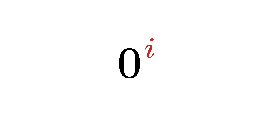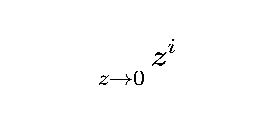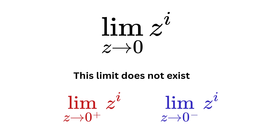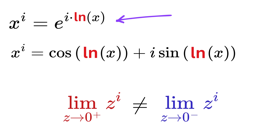So instead of evaluating 0 to the i directly, what if we bring a number, say z, which gets infinitely close to the value 0 and not exactly 0? In such a case, we have to bring in the concept of limits. The problem is that this limit does not exist because if we approach 0 from two different directions — from the positive side and the negative side — the value of the limit will not be equal in both cases. And the reason for that is this value of theta, or the natural log of x.